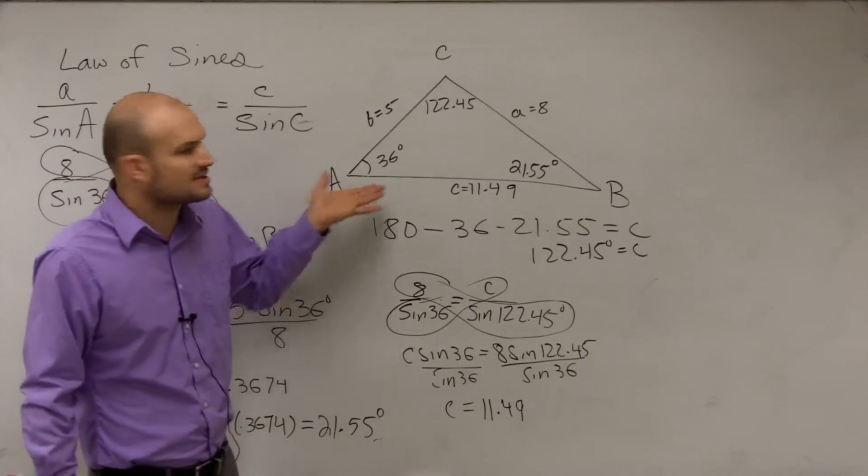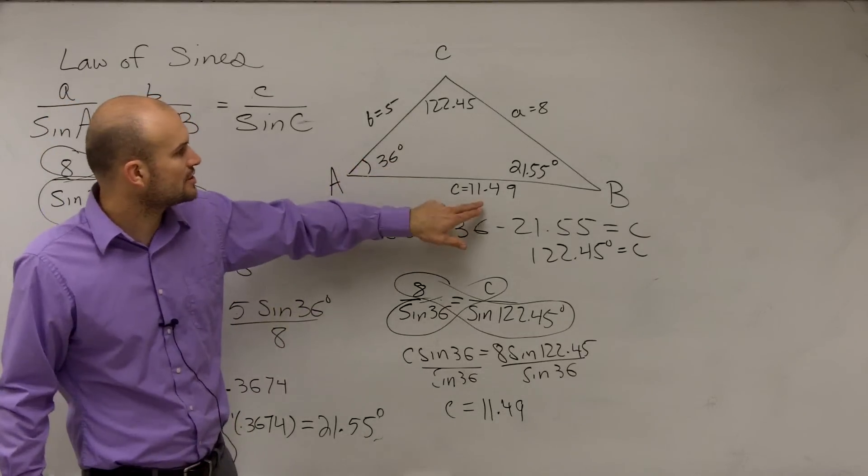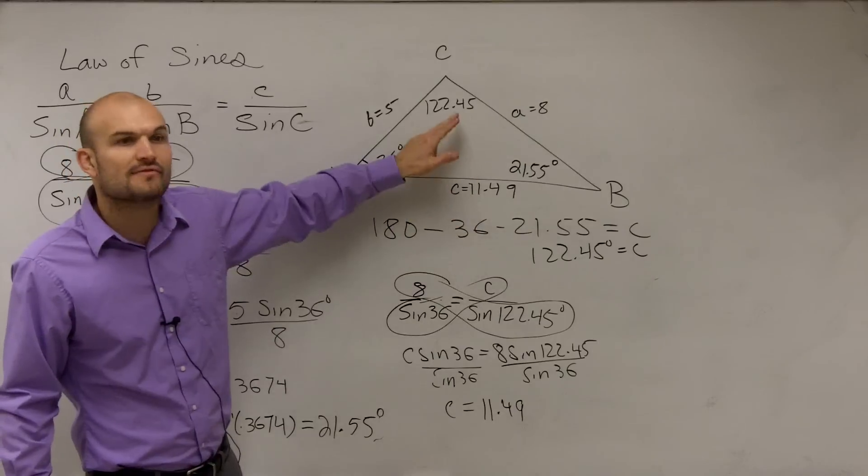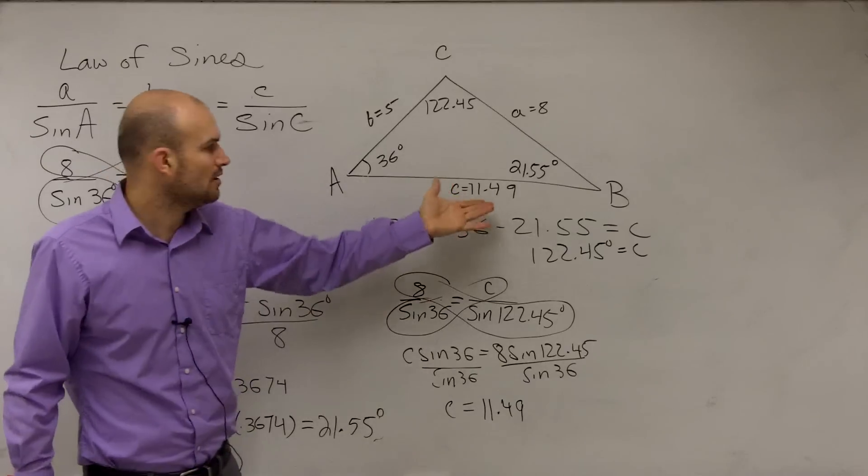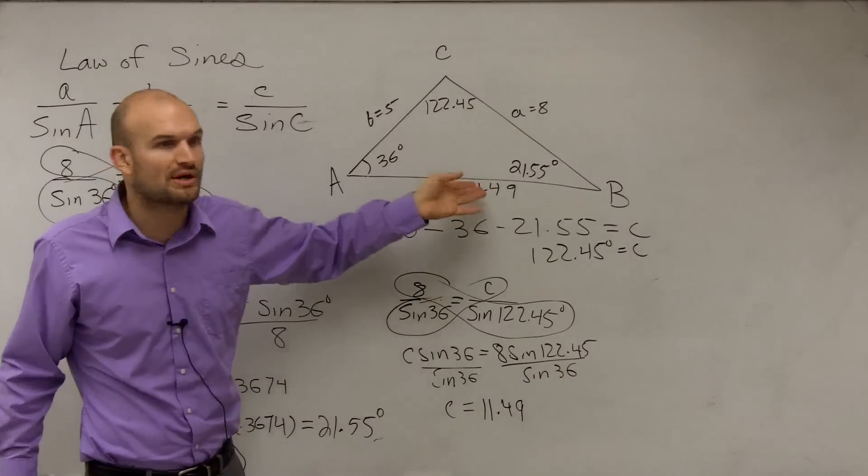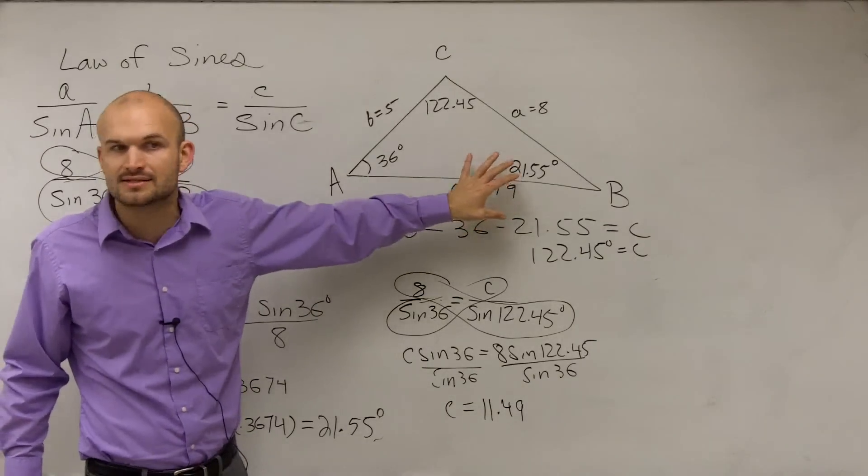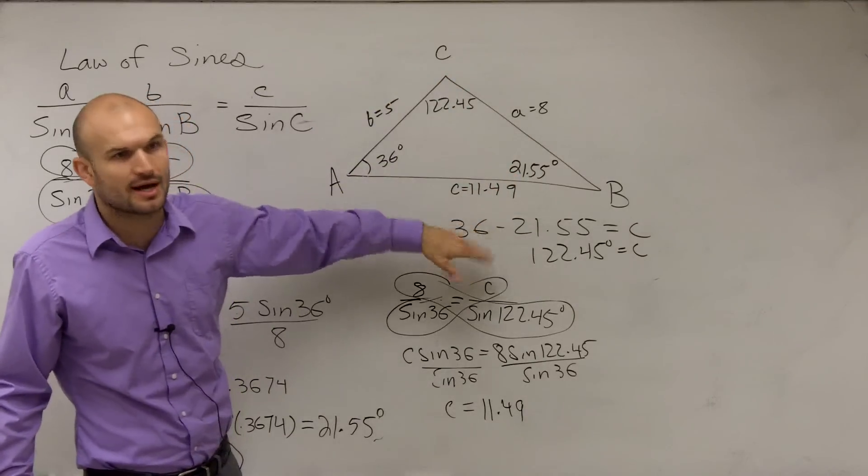And then we just kind of look at this, and does that kind of make sense? Is C the largest side length? Does it also have the largest angle? Yeah, right? So everything does kind of fit within the triangle. I'm not getting like 1,087 or 0.43. So the triangle makes sense. This is your largest angle, and it produces the largest side.